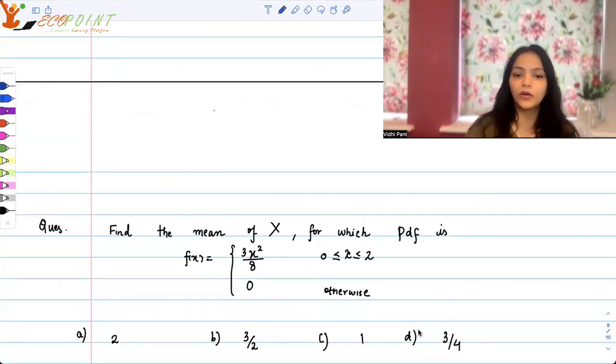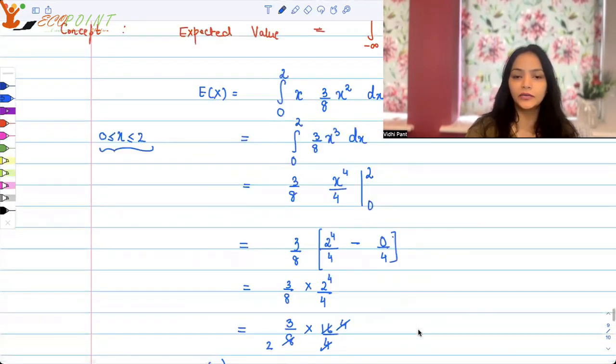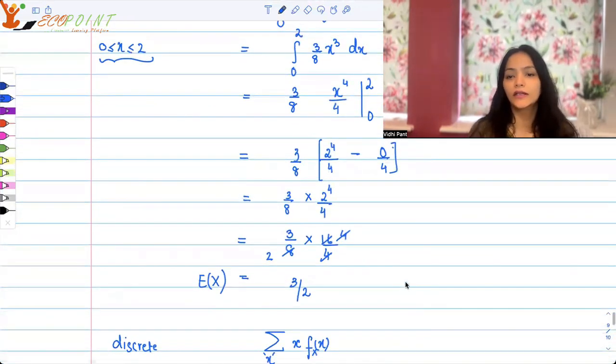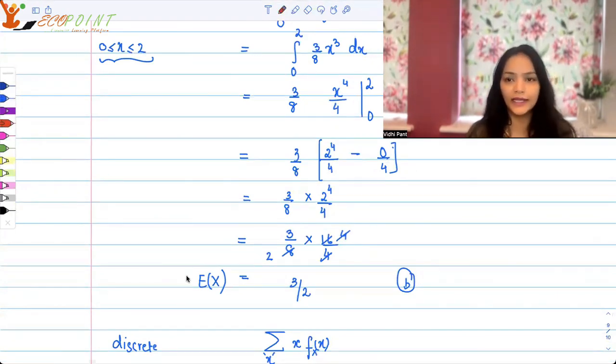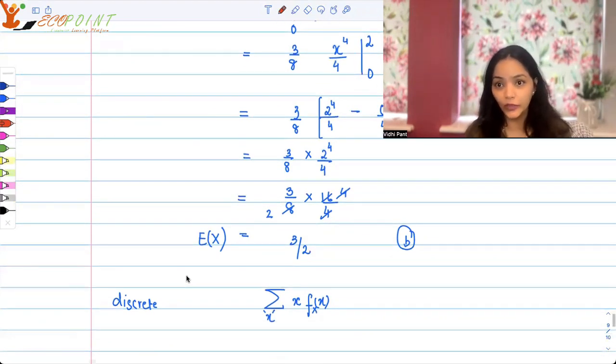Yes, one of the options is giving us 3/2, and option b is the correct answer. When it's a continuous random variable, you're taking weighted average using integral x f(x) dx. When it's a discrete random variable, it will look like summation—you'll be summing over x f(x). That's the only difference between the two.